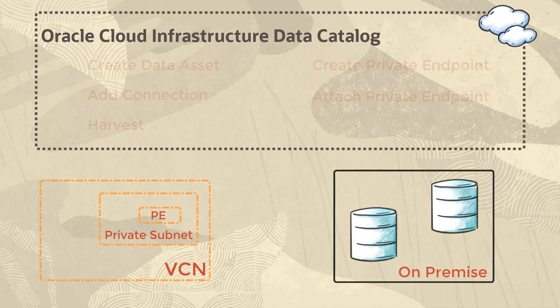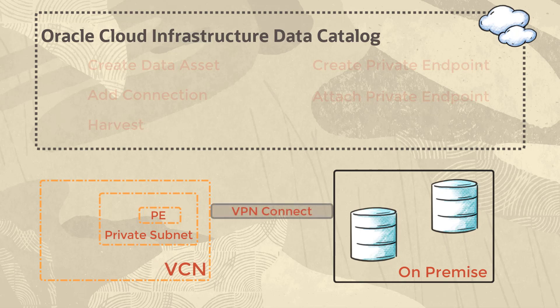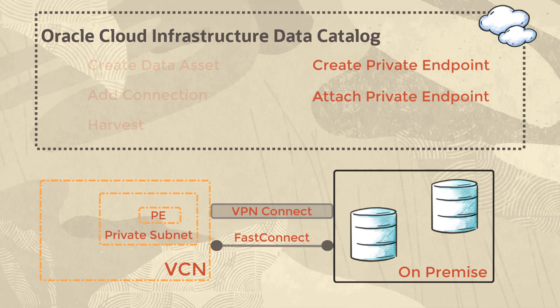you can connect an on-premise data source to an Oracle Cloud Infrastructure VCN using either VPN Connect or Fast Connect. Then, create a private endpoint in data catalog, attach it to the data catalog, and harvest the on-premise data source.